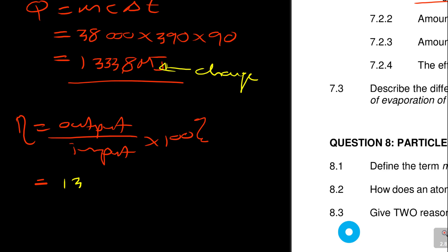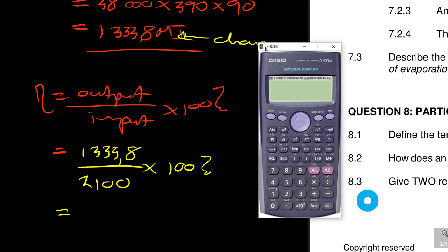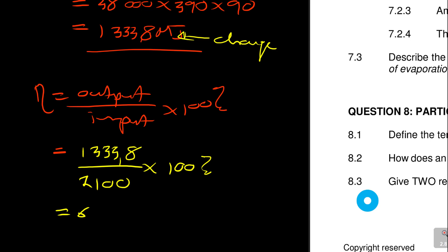So the output was 1,333.8 divided by the input of 2,100, times 100. The top number must always be smaller — you cannot get a percentage higher than 100. That gives 63.514 percent. That's the efficiency of this system.